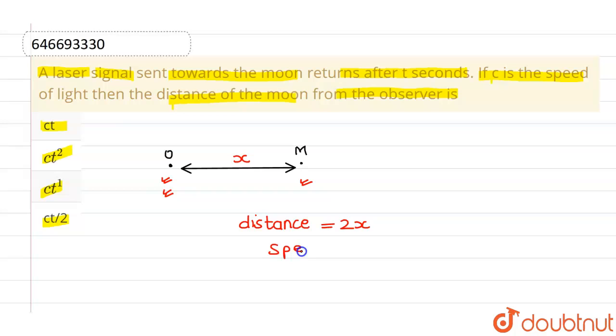Now, speed is also given of laser light which is C and time required to go from O to M and then again come to O is T. Now, using the formula distance equals to speed into time, I can write 2x equals C into T.